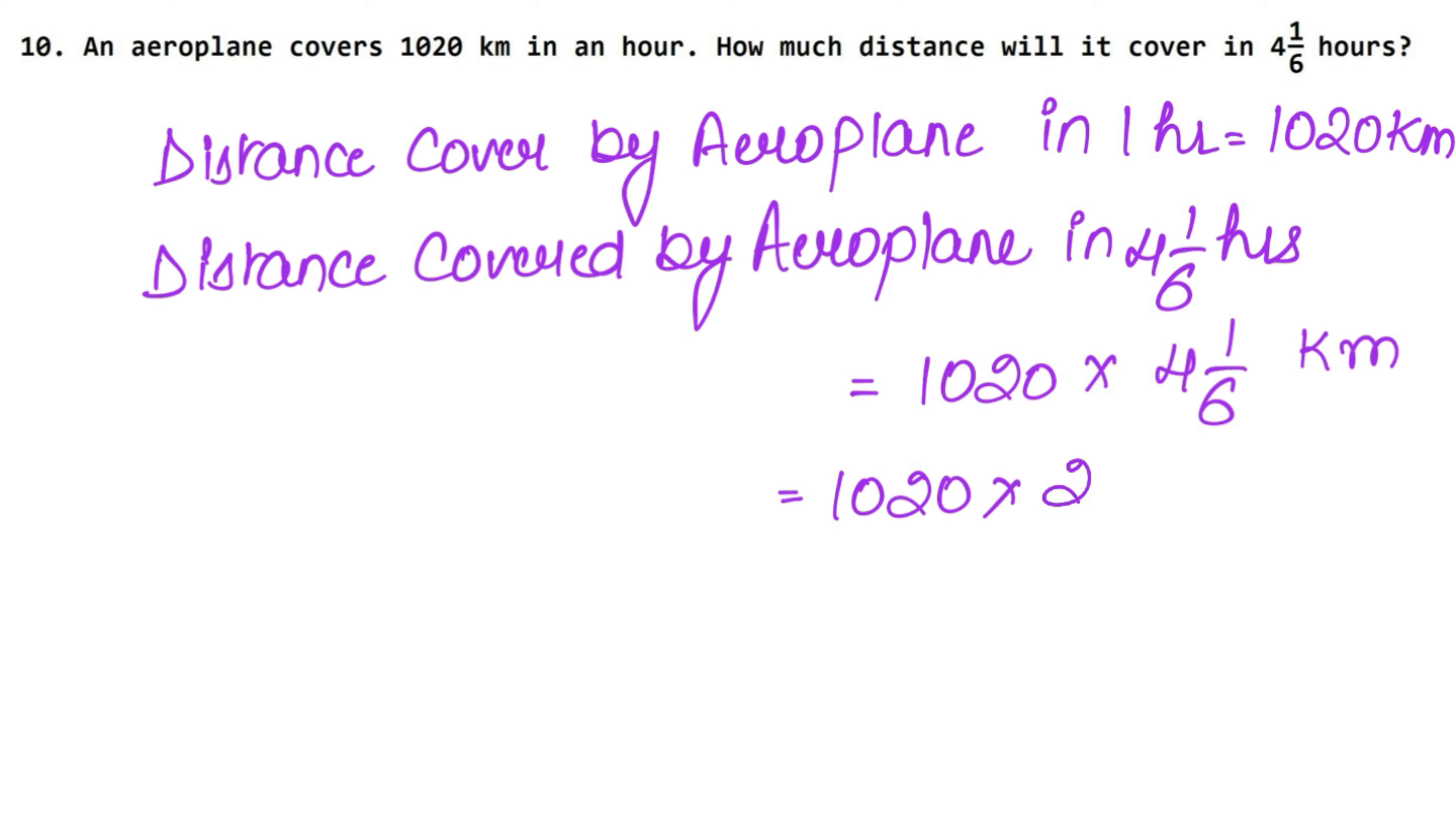So see, 1020 as it is. Now this mix fraction we'll change to fraction: 6, 4s are 24 plus 1 is 25 upon 6. So see what cancels we'll cancel. 2, 3s are 6. 2, 5s are 10. 2, 1s are 2 and 0. So this is getting cancelled by 3. 3, 1s are 3. 3, 1s are 3, 3, 7s are 21 and 0.